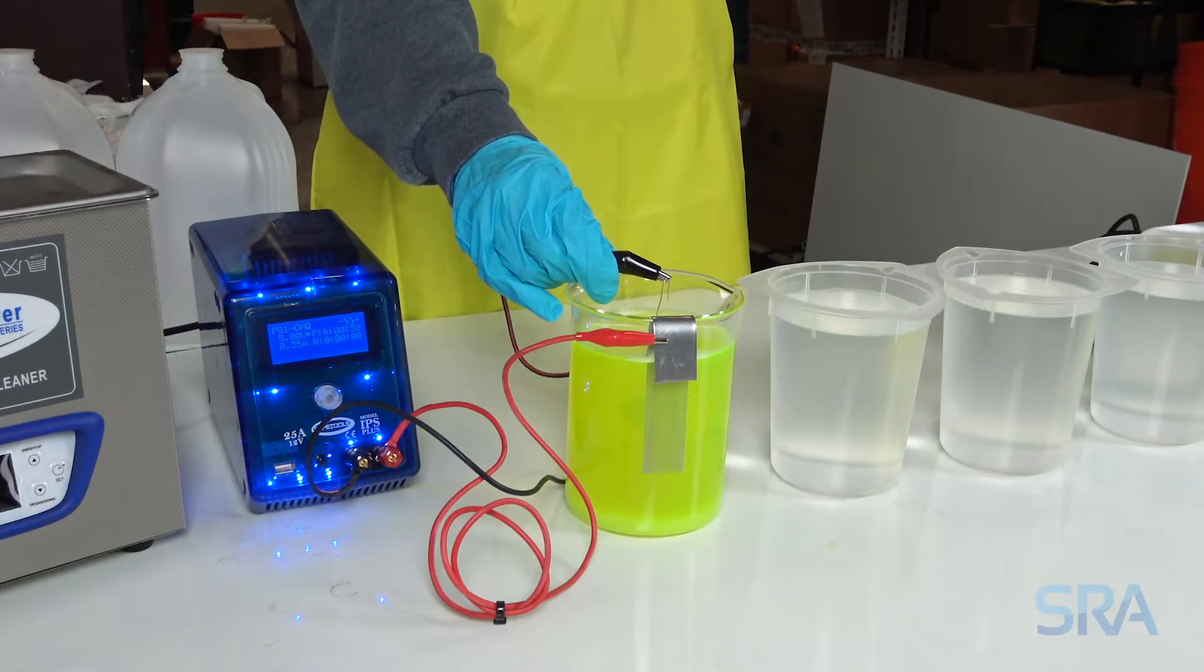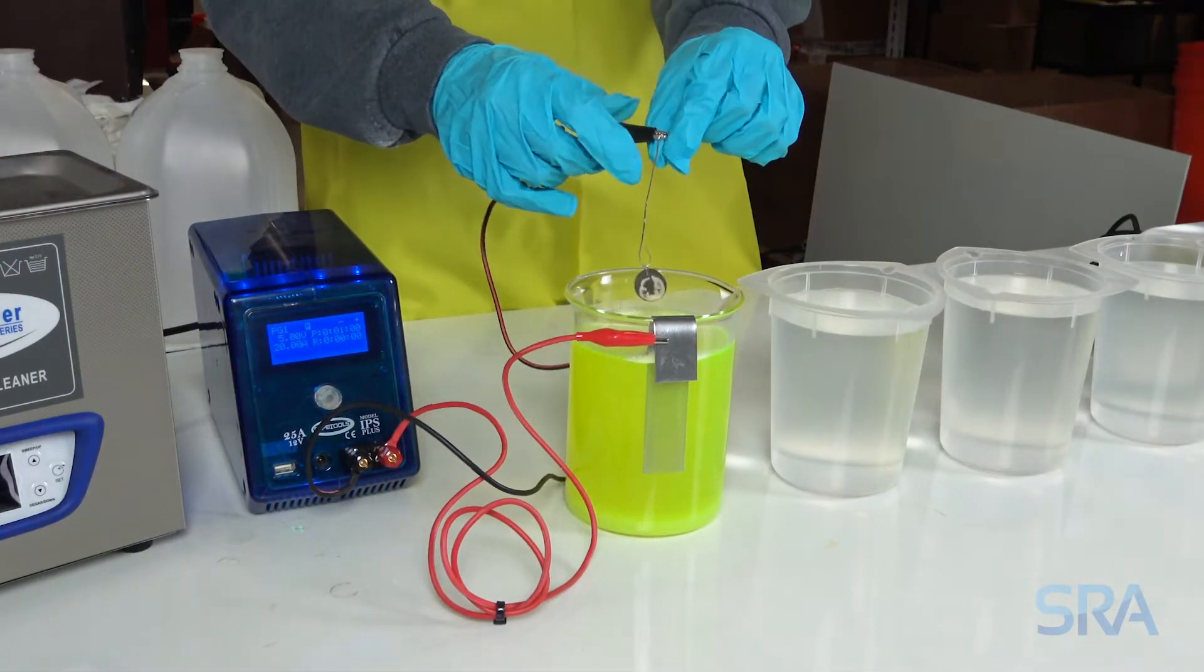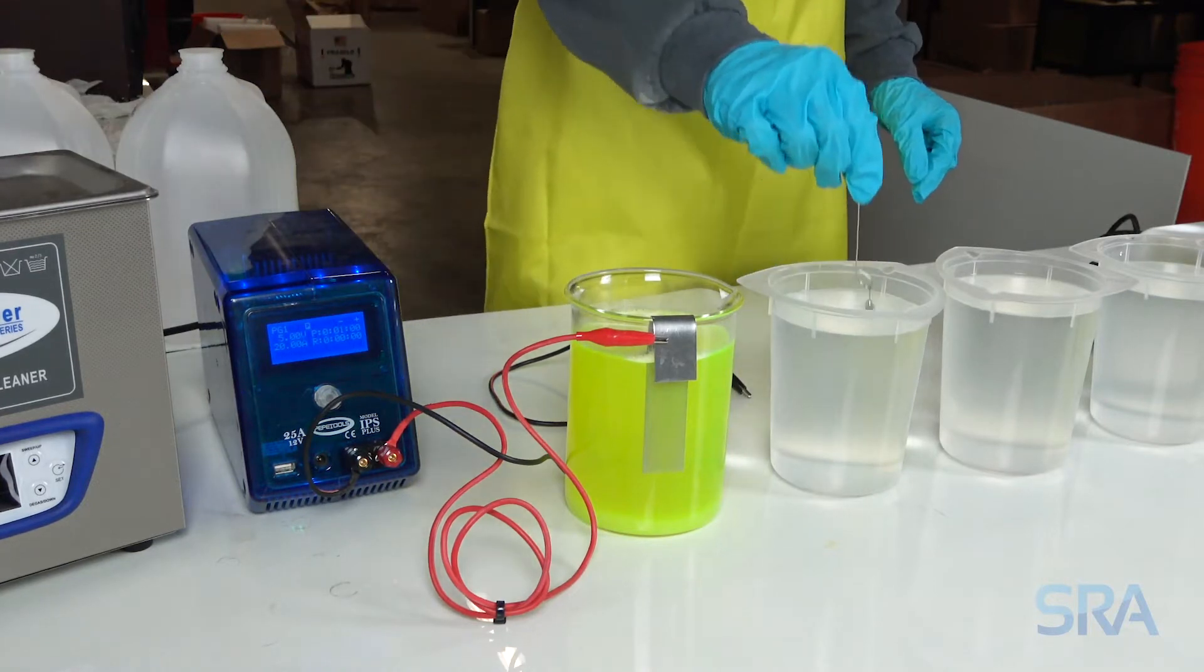This process removes any oil from the hands and polish to ensure the plating solution bonds well to the surface. Once completed, rinse in distilled water, then visually inspect the item for polish oil and electro clean again if needed.